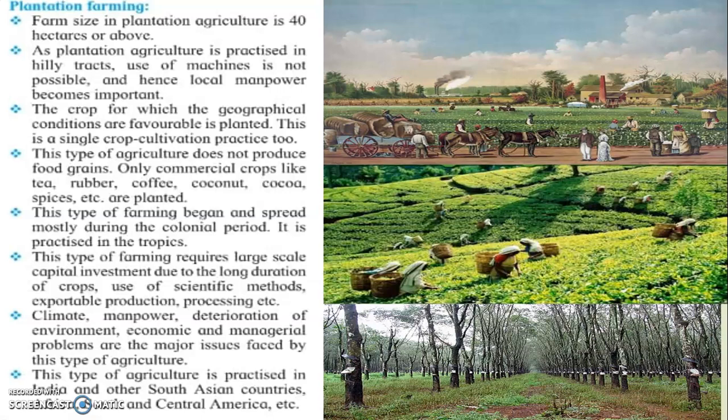The farm size in plantation agriculture is 40 hectares and above. Since plantation agriculture is practiced in hilly tracks — hilly areas — the use of machines is not possible, so local manpower is required. Plantation farming is not about growing a seasonal crop; you are planting a tree that will yield for years together. The crops for which the geographical and climatic conditions are favorable are planted in these areas.